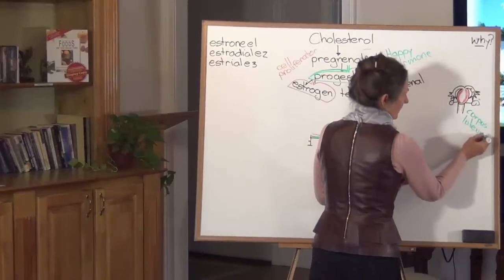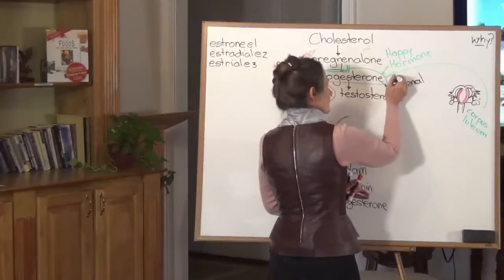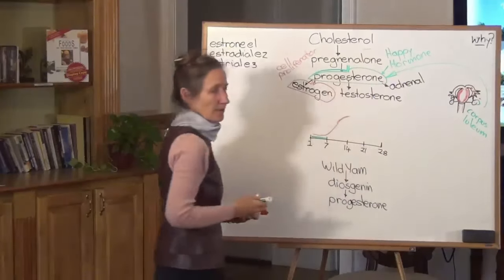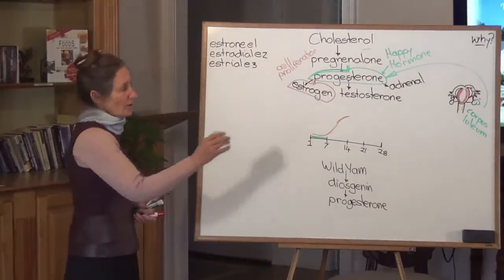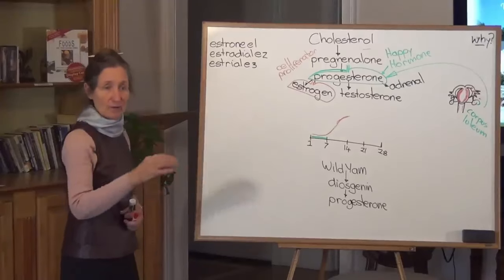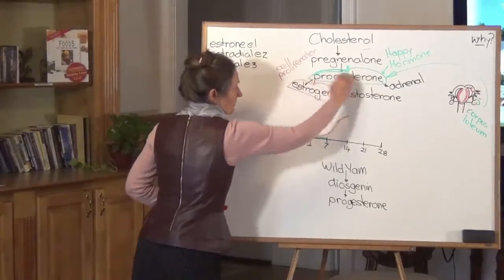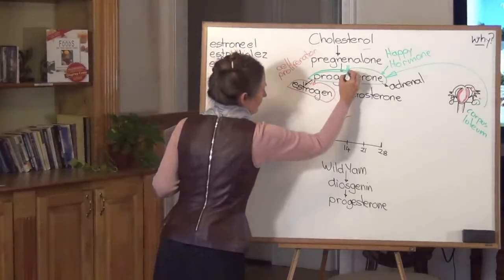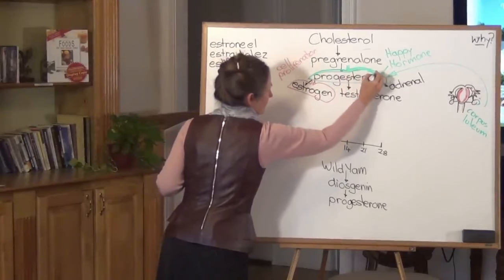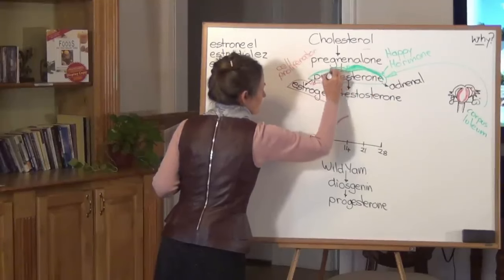I'm writing it in green because corpus luteum is the main site of progesterone production in a woman's body. Can you see the importance of a woman ovulating every month? Because when she ovulates her corpus luteum is made. And when her corpus luteum is made that maintains progesterone. And remember progesterone is the precursor or the balancer of all those other hormones. So progesterone is such an important hormone.